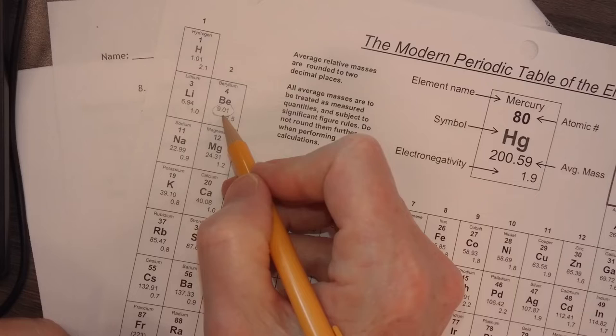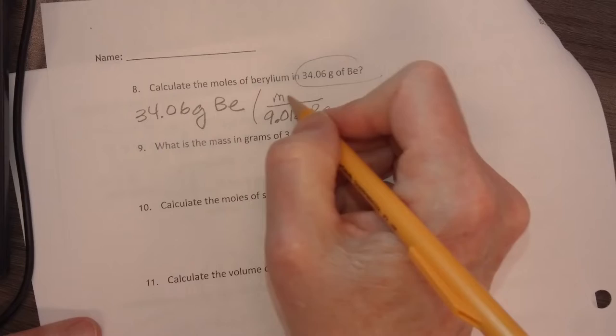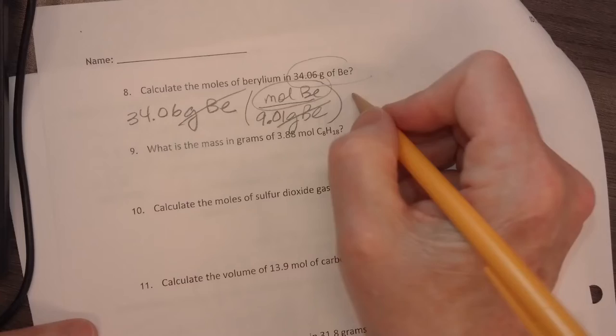Beryllium I recognize as an alkaline earth metal. It has a molar mass of 9.01 grams. So we need the grams to divide out, so we're going to divide it by the molar mass, 9.01 grams per mole. And so the grams divide out and I get moles of beryllium.